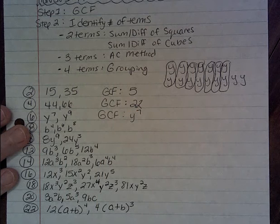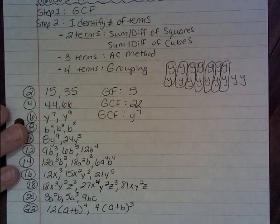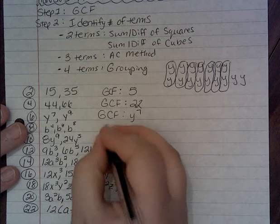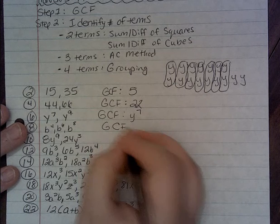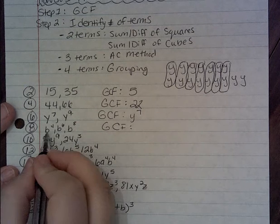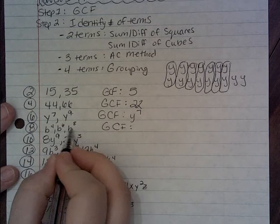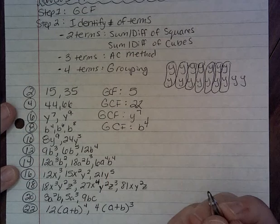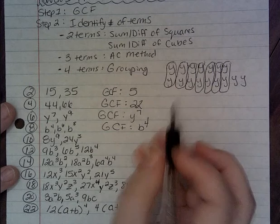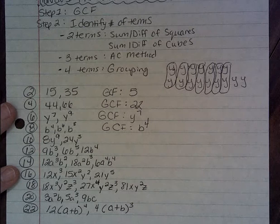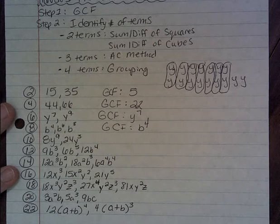You will notice that your greatest common factor is always going to include your smallest exponent. So for number 8, you have b to the 4th, b to the 6th, and b to the 8th. Your greatest common factor is b to the 4th. If you were to draw them out like the y's, you would notice that the most b's you can take from all three groups would be 4 of them.